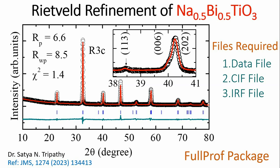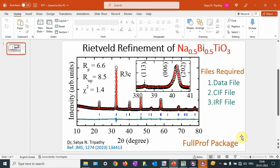I am going to basically use three files: data files, CIF files, and IRF files. The data file is the XRD data you collected in your XRD diffractometer. The CIF file is the crystallographic information file — it is a standard model. The IRF file is the instrumental resolution file, which is basically required for the refinement.